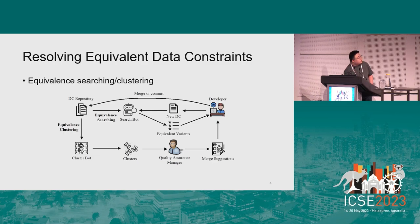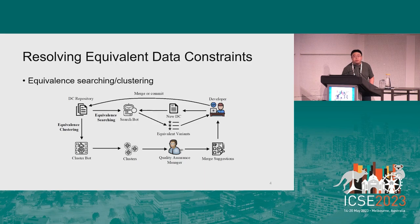A developer wants a search bot to conduct equivalent searching upon submission. When they want to submit some new data constraint, they can find whether there are any existing ones in the data constraint repository equivalent to the ones they want to submit. A quality assurance manager wants to divide the existing data constraints into several clusters, so the checking engine only checks one data constraint per cluster, avoiding redundant checking.